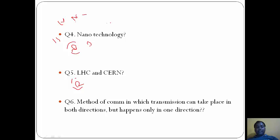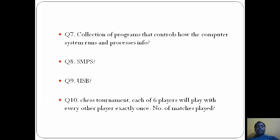Method of communication in which transmission can take place in both directions but happens only in one direction - the correct answer is B, half duplex. You can google it and find it in Wikipedia. Collection of programs that control how the computer system runs and processes info is B, operating system. SMPS is Switch Mode Power Supply, that is C. USB is Universal Serial Bus, that is C.